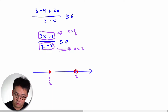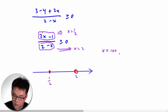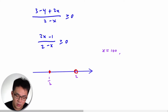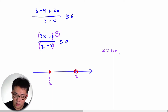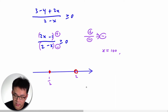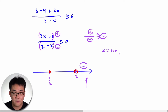I'm going to test a very large value — x equals 100. When x is 100, the numerator 2(100) minus 1 is positive. The denominator 2 minus 100 is negative. So positive divided by negative gives an overall negative result. So x equals 100, which is to the right of both roots, gives a negative outcome.